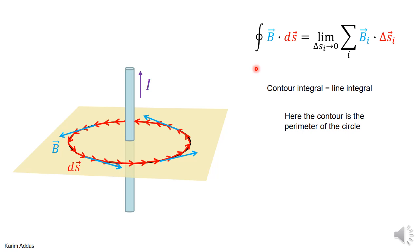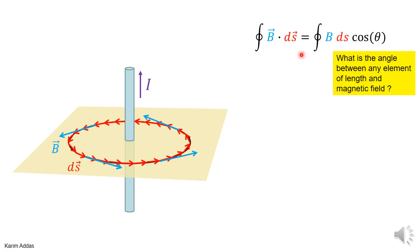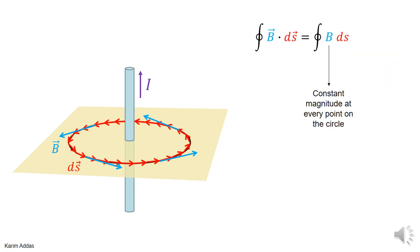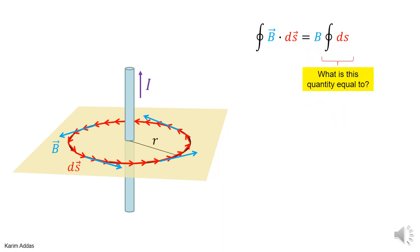The integration of B·dS equals the integration of B·dS·cosθ. The angle between every element of length dS and the magnetic field is the same at every point around the circle — the magnetic field is always parallel to dS, so the angle is zero and cosine zero is one. Therefore the integral simply becomes the integration of B·dS. Since the magnetic field magnitude is the same everywhere on the circle, we can take B outside the integral.